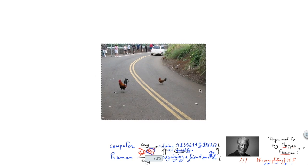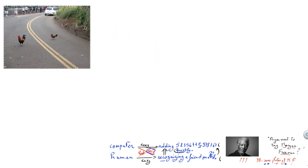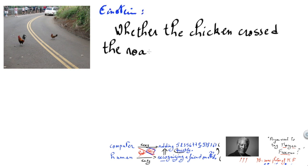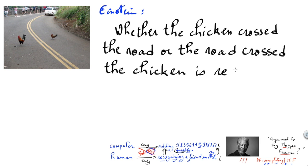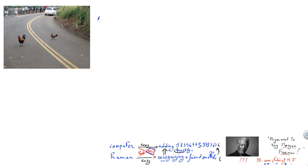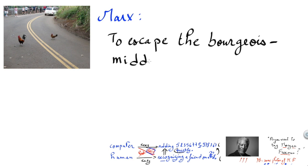There is a joke that illustrates this, based on the famous philosophical joke of why the chicken crossed the road. In front of a situation of a chicken crossing roads, many celebrities will have different answers. Einstein would say something like: whether the chicken crossed the road or the road crossed the chicken is relative. Marx would say that the chicken crossed the road to escape the bourgeois middle-class struggle.